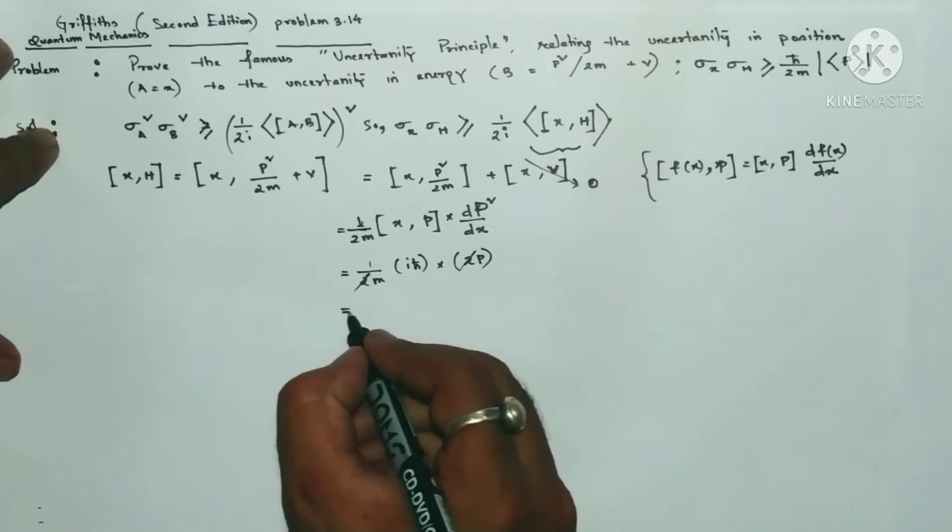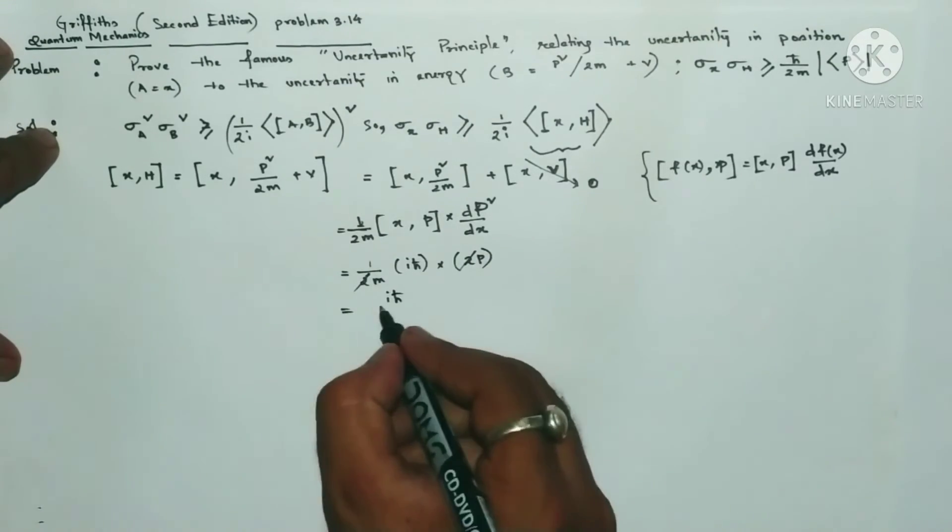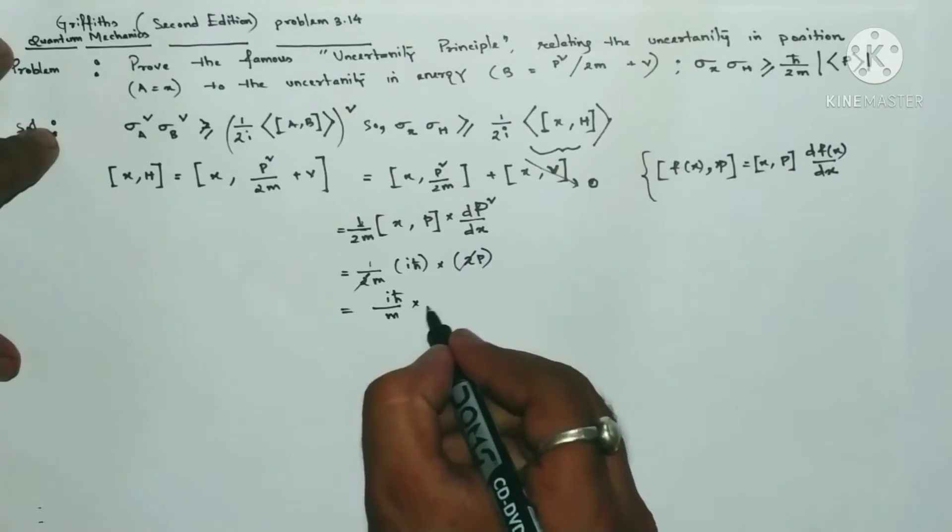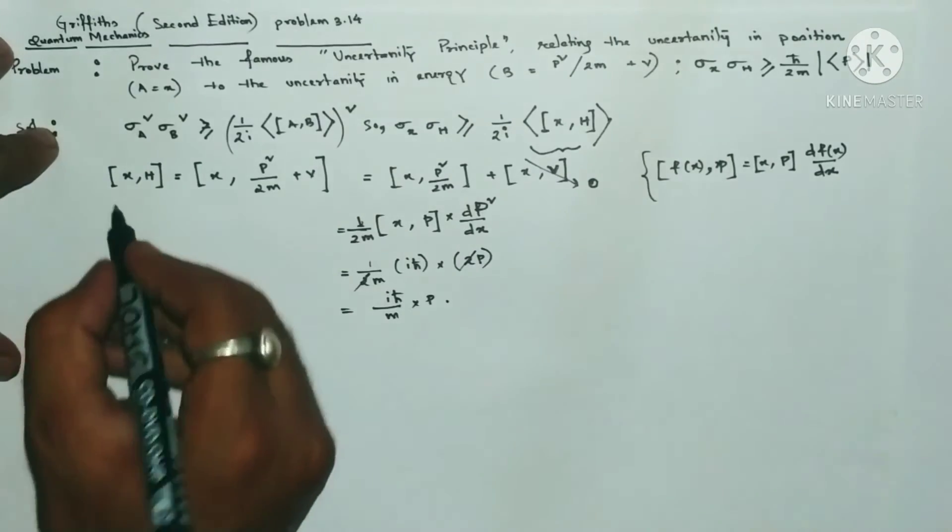So one by 2m, the commutator of X comma P will be i h-bar, and the derivative of P squared is 2P. Then 2 and 2 will cancel out and we will be left with i h-bar by m multiplied by P.